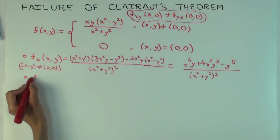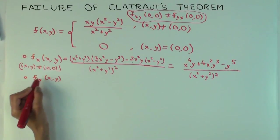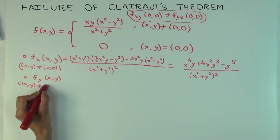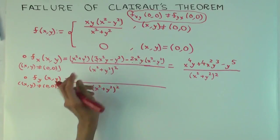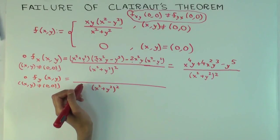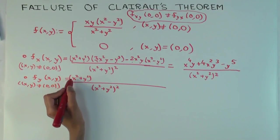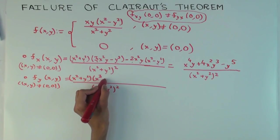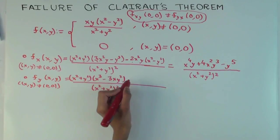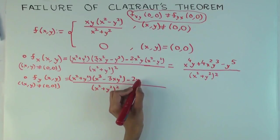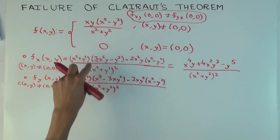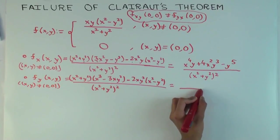Okay. So, f sub y of (x,y), again, where the point is not (0,0). So, what would this be? Replace all x with y, however, that... Well, it's not quite symmetric in x. Well, you can try doing that. Let's just redo it again and check later, check at the end if our answer matches that criteria. So, you get x squared plus y squared times the derivative of the numerator: x cubed minus 3xy squared. Minus 2y times xy, so 2xy squared times x squared minus y squared.